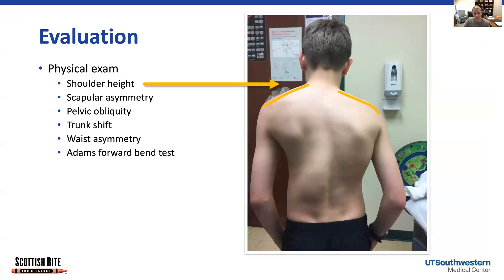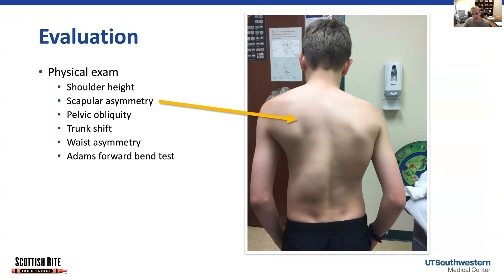On physical exam, these are the things we look for to give us a clue that there's a true scoliosis deformity. We look at shoulder height — on this patient, you can see that the left shoulder is higher than the right shoulder. We also look at scapular asymmetry. A lot of times we'll see that the scapulas are at different heights or that one is more retracted than another.